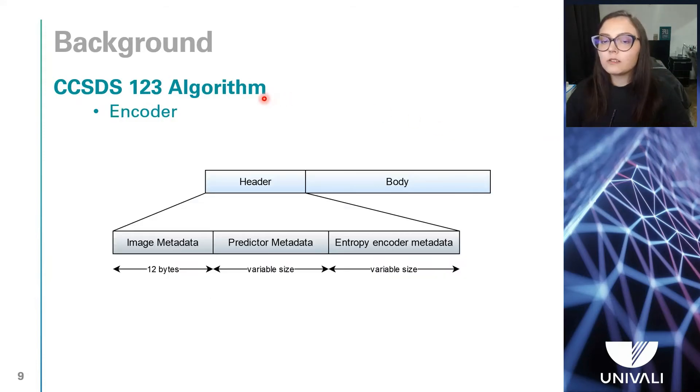The encoder consists of the compression and organization of the samples, and the compressed hyperspectral image consists of a package with a header followed by a body. The header consists of three parts, the image metadata, the predictor metadata, and the entropy encoder metadata.